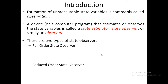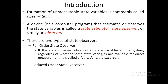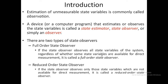There are two types of state observers. First, the full-order state observer: if the state observer observes all state variables of the system regardless of whether some state variables are available for direct measurement, it is called a full-order state observer. Second, the reduced-order state observer: if the observer observes only those state variables which are not available for direct measurement, it is called a reduced-order state observer.